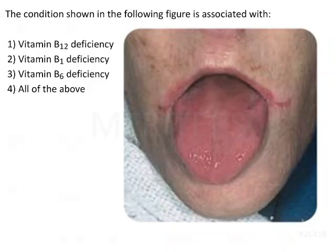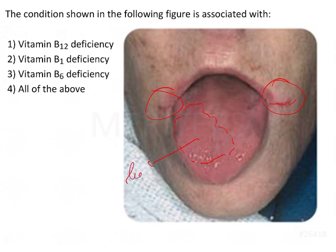The condition shown in the following figure is associated with — if we see this particular figure, at the corner of the mouth there is some erythematous lesion. At the same time, you will be able to appreciate that in this particular area there is loss of papillae. This is the area where filiform papillae are found, so loss of filiform papillae is being seen here, which signifies atrophy.